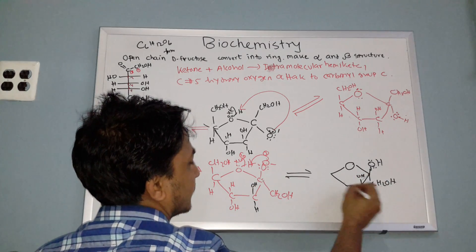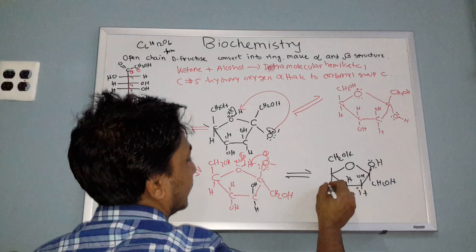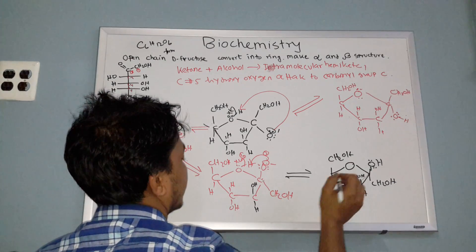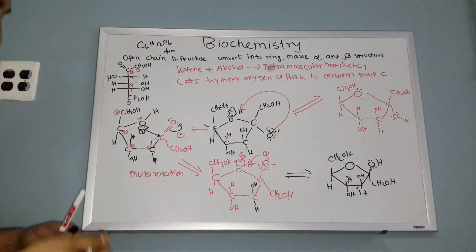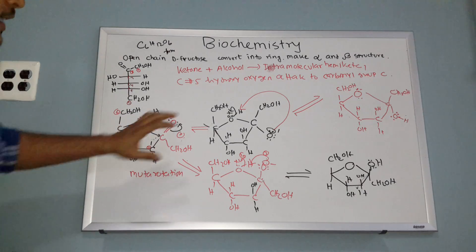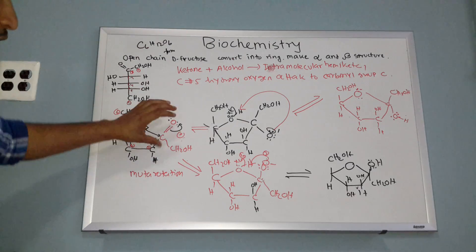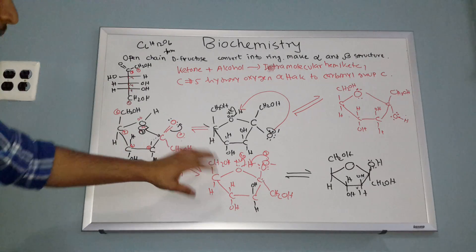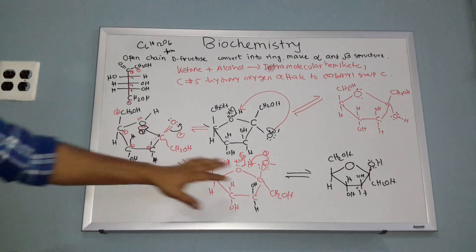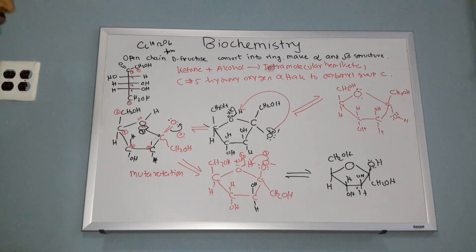So you get two possible structures: one has OH, H, H, OH, CH2OH arranged one way, and the other structure is arranged differently. Now you have to identify which one is the alpha structure and which one is the beta structure. To know this, you have to understand one rule based on carbon number two.